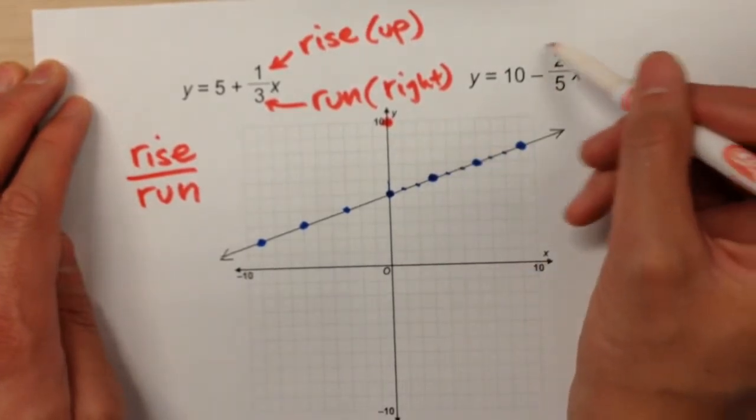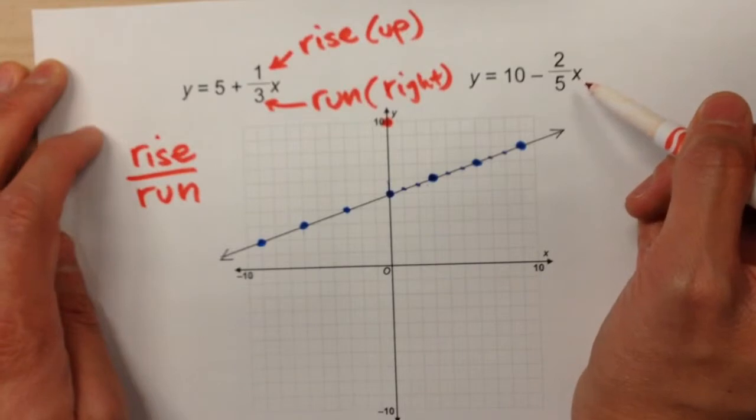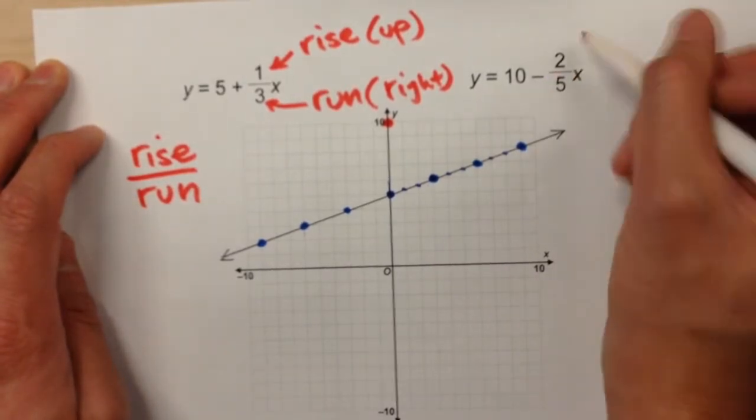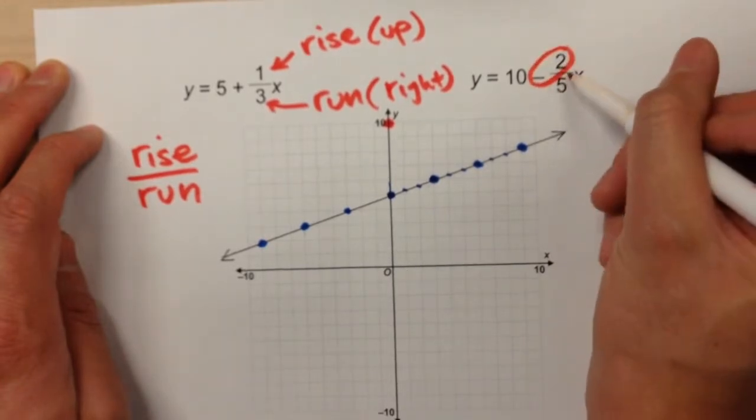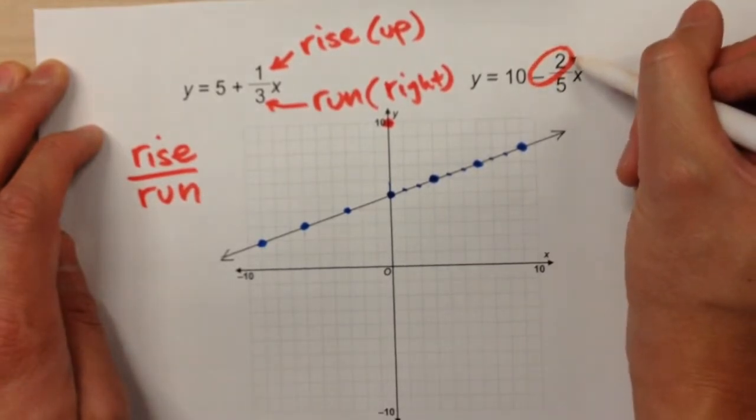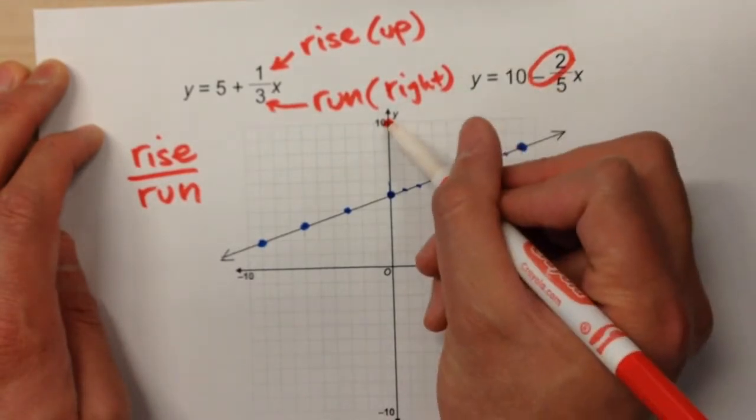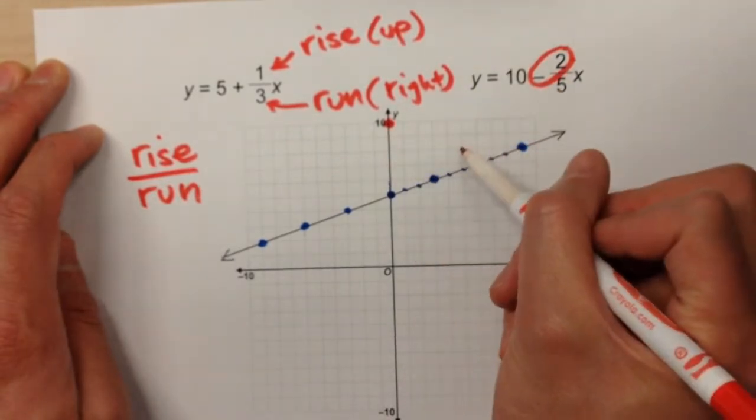From there, I'm going to use my slope to determine my pattern. My slope is negative two-fifths. In this case, because it's negative two-fifths, I think of this as going down two, right five. So my graph is going to look like this. Down two, right five. Down two, right five.